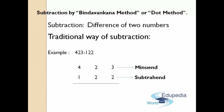Here, the first number — that is 423 — is called as the minuend, which means the bigger number. And 122 is called as the subtrahend. Minuend means the number from which another number is going to be subtracted, and the subtrahend means the number that is going to be subtracted.